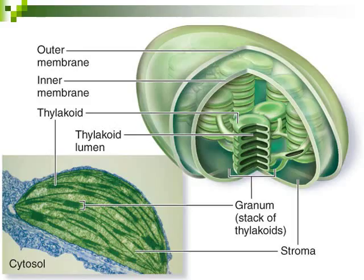Chloroplasts are made up of three different membranes. They have an outer membrane on the very outside, then an inner membrane. Inside the inner membrane, there's an open space called the stroma. In addition to that open space, you have a third membrane called the thylakoid — those are the little green stacks you see in the very middle. The thylakoid is where photosynthesis is actually going to be taking place.